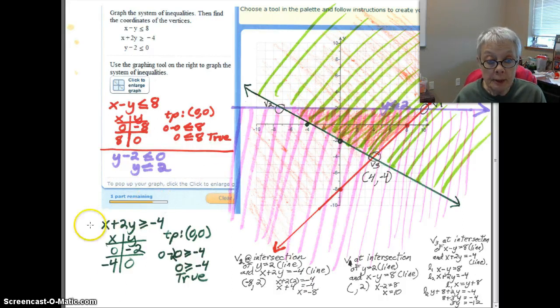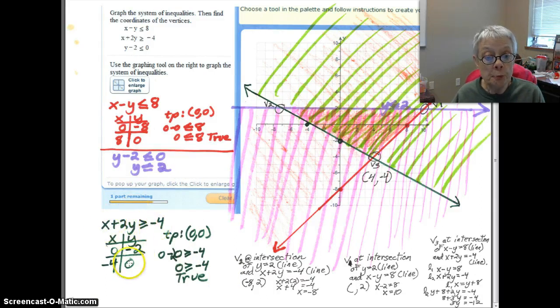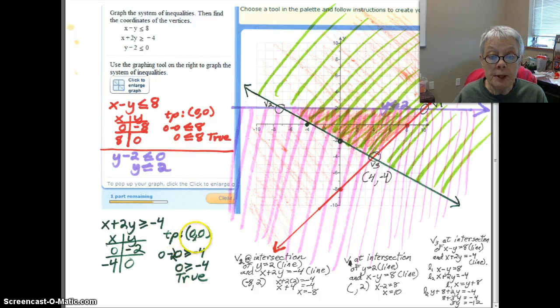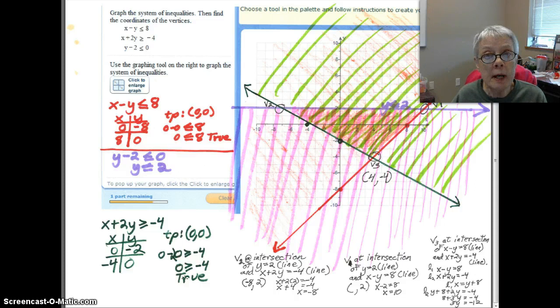Now, let's go down here to X plus 2Y is greater than or equal to negative 4. I found two points that are on that line, drew the line through them, found a test point, 0, 0, put that 0 in for X and that 0 in for Y, and I got a true answer. That 0 is greater than, not equal to, but greater than negative 4. 0 is greater than any negative number.